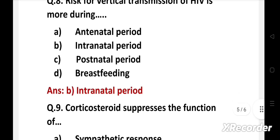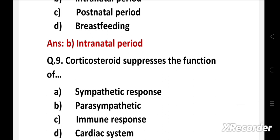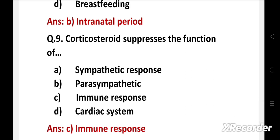Next question. Corticosteroid suppresses the function of: option A sympathetic response, B parasympathetic, C immune response, D cardiac system. Right answer is option C, immune response. Corticosteroids are primarily used to reduce inflammation and suppress the immune system.